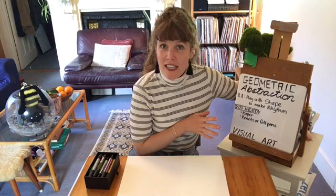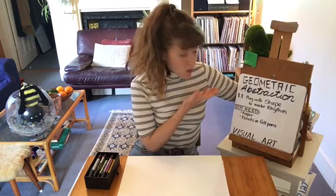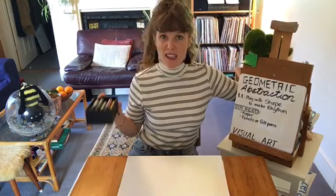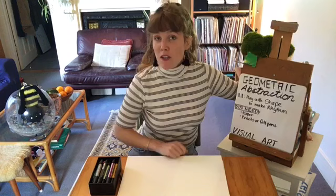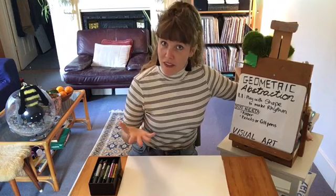Before I explain what geometric abstraction is, I'll tell you what you need for today's lesson. All you need is paper — any size, any color — and pens, pencils, crayons, or anything you'd like to draw with. Just make sure you have one black color: black pencil, black pen, black vivid, or black paint.